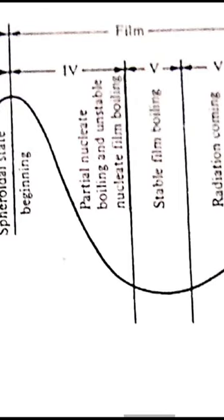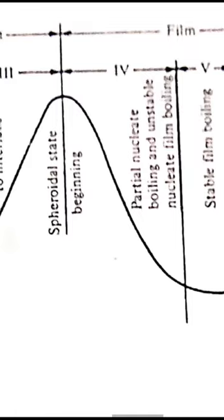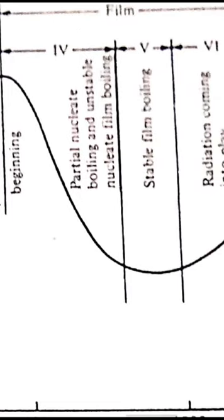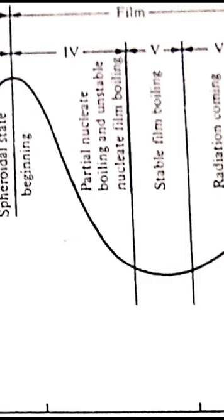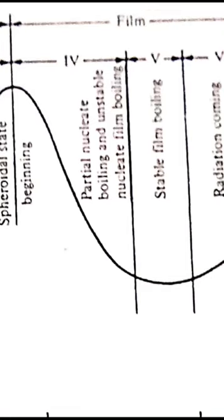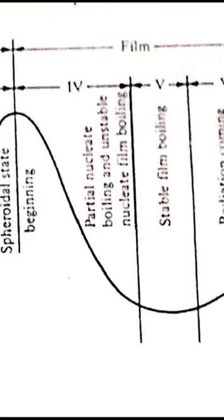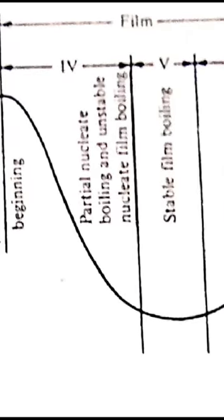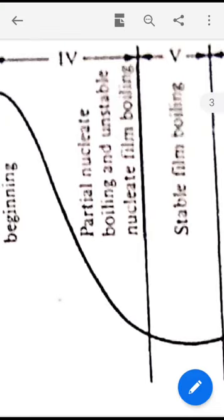Nucleate boiling is followed by film boiling regime. In film boiling, a continuous vapor film covers the heater surface. The vapor film will act as a resistance, will offer resistance to heat flow and also reduces the liquid to heater contact. Therefore, H is found to decrease in the film boiling regime. In film boiling there are again three zones.